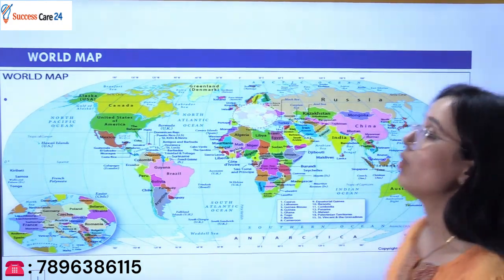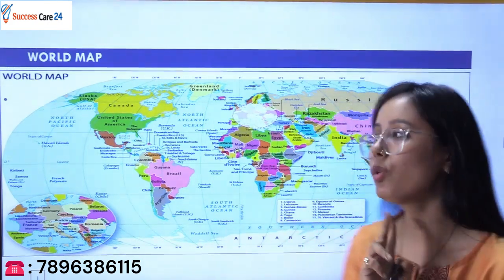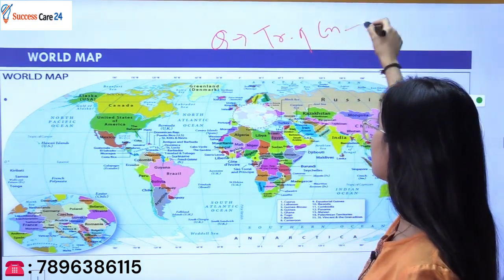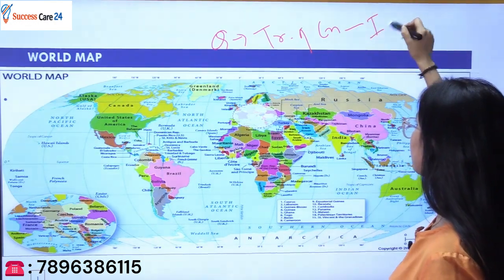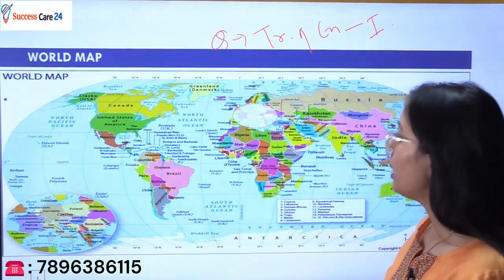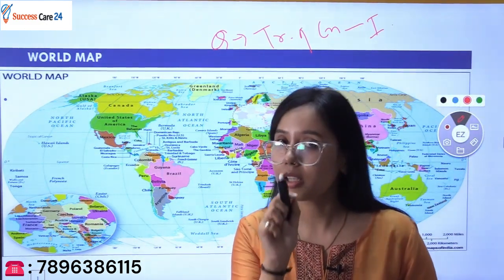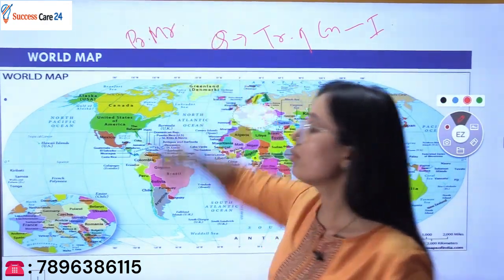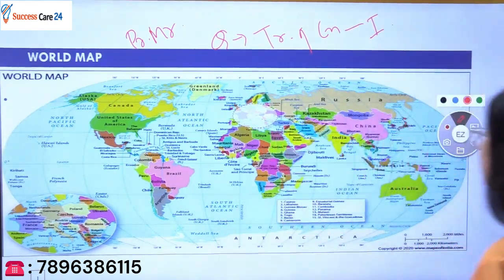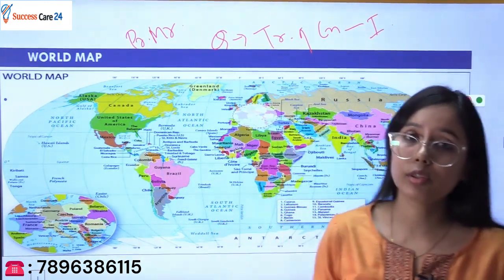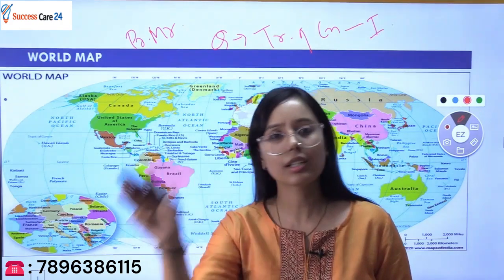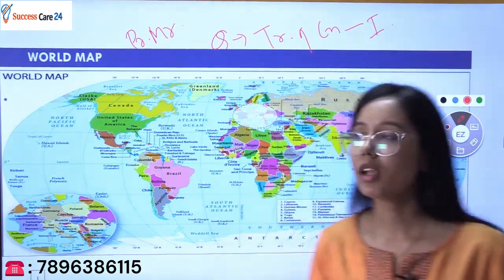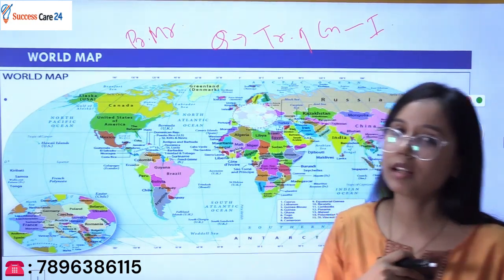I hope this video is helpful for you. I have two questions for you — please answer both in the comment section. First question: which states in India does the Tropic of Cancer pass through — there are eight states. Second question: which countries does the Prime Meridian (Greenwich Mean Time line) pass through? We will continue this mapping series covering each continent separately — African continent, North American continent, South American continent — so you get a clear idea of all continents. That's all for today, thank you very much.